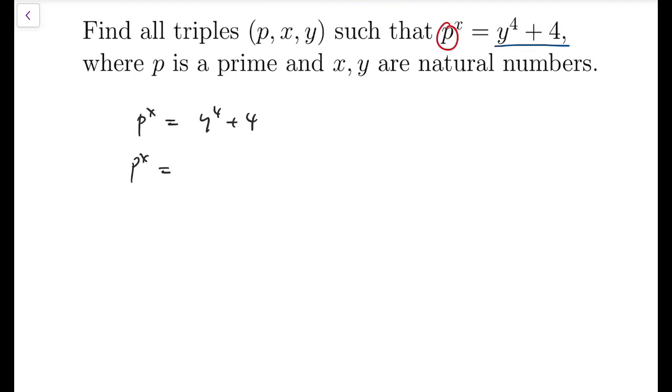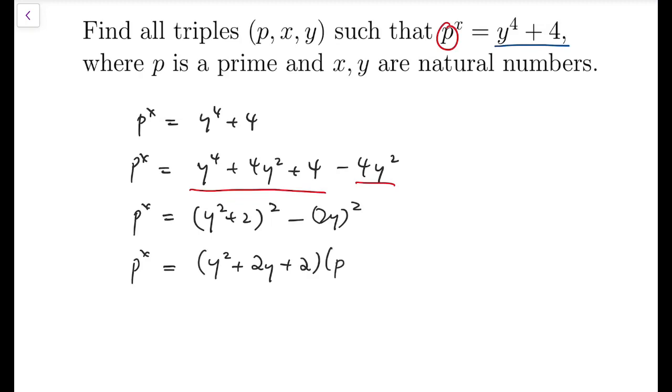So we start from the original equation, we factorize. And the way to factorize that is to add 4y squared in the middle and minus 4y squared at the end. So the equation is still balanced, and at the same time, the first three terms is a perfect square, and the last term is also perfect square. Then, factorize that group, and we'll get y squared plus 2 whole squared minus 2y whole squared. And so p to the x equals y squared plus 2y plus 2 times y squared minus 2y plus 2.